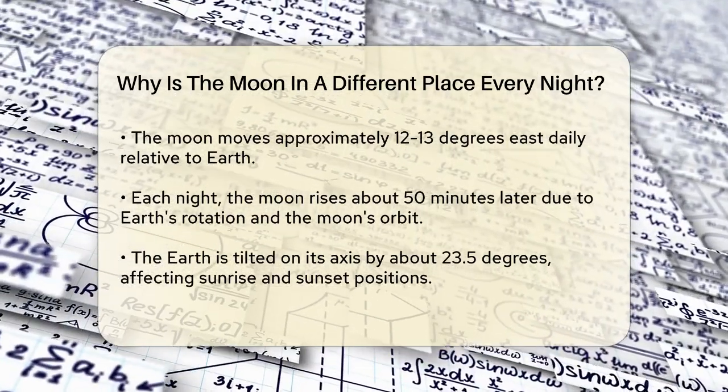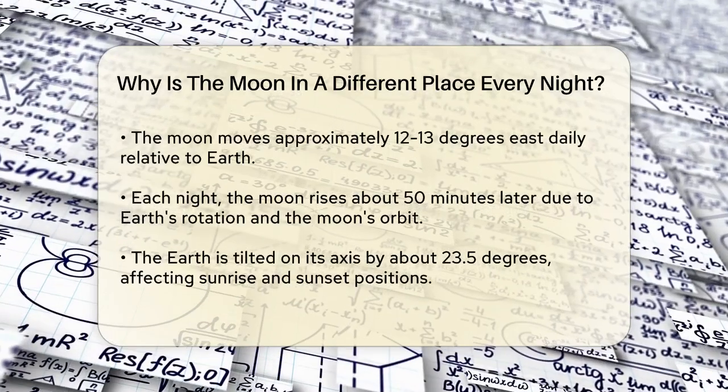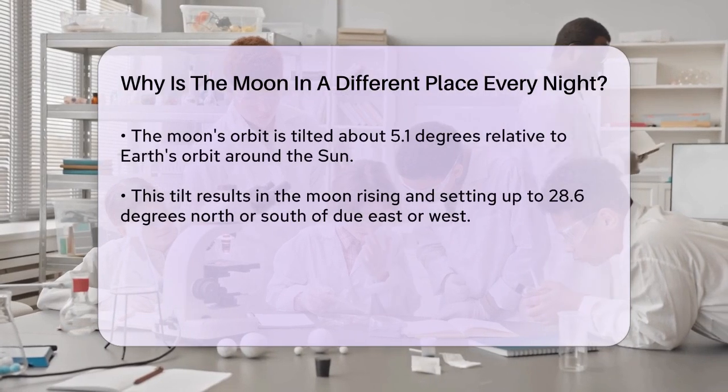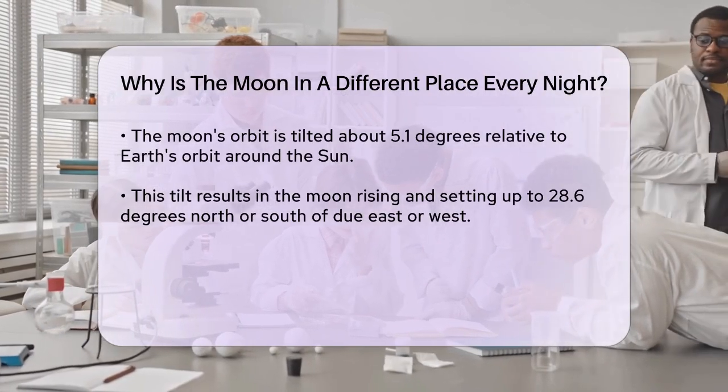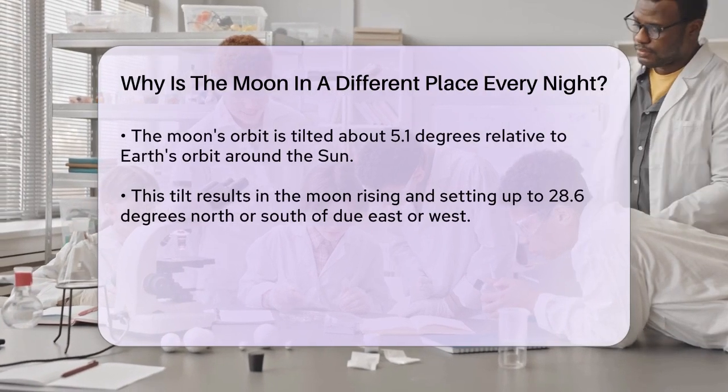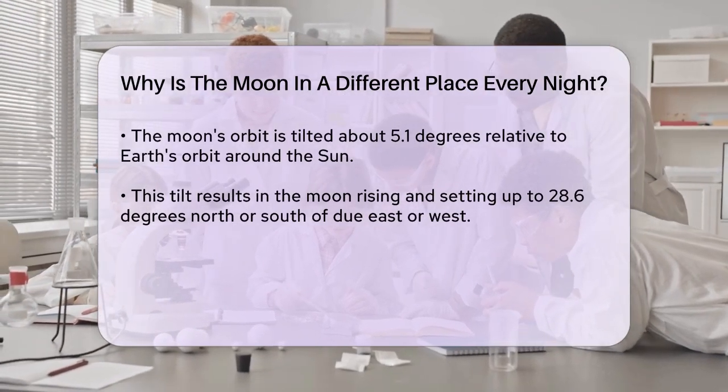Similarly, the Moon's orbit is tilted about 5.1 degrees relative to the Earth's orbit around the Sun, which adds to the variation in the Moon's rise and set positions. This results in the Moon rising and setting up to 28.6 degrees north or south of due east or west.